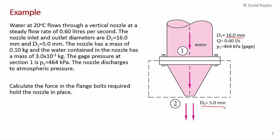So we're not going to neglect gravity this time. The gauge pressure at section 1 is 464 kilopascals, and the nozzle discharges to atmosphere. We want to use these facts to calculate the force in the bolts that attach the flange to the pipe and hold the nozzle in place.